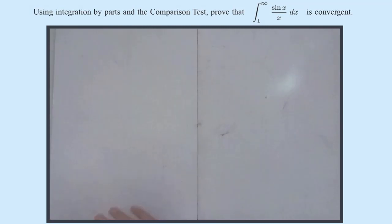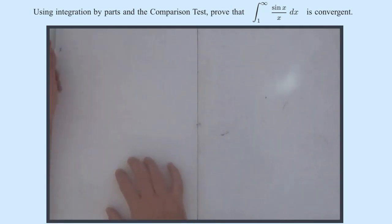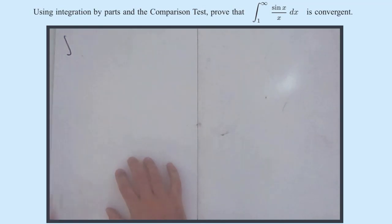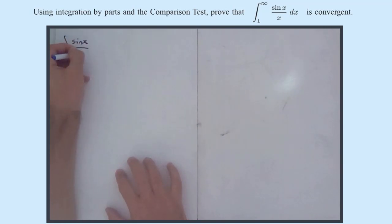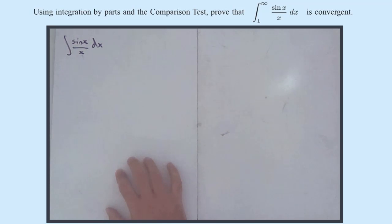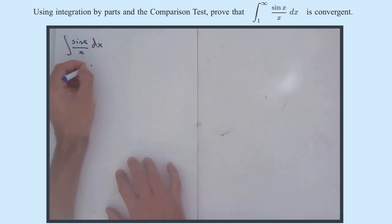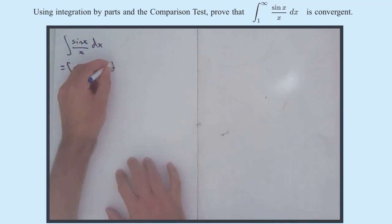I'm going to ignore the limits for now, because there's enough algebra in it already. I'm just going to get an expression for the integral and treat it as an indefinite integral. So the integral of sin(x)/x with respect to x. If we want to use integration by parts, we need to rewrite this as the integral of sin(x) times 1/x dx.